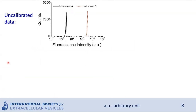Here is a little example of a fluorescent calibration of flow cytometry. I measured the same sample containing vesicles on two different flow cytometers — instrument A and instrument B. The black line shows instrument A and the red dotted line shows instrument B. What you can see is the uncalibrated data: counts measured in a given amount of time, and fluorescent intensity in arbitrary units — specific to each instrument. The data differs between the two instruments, even though it's the same sample.